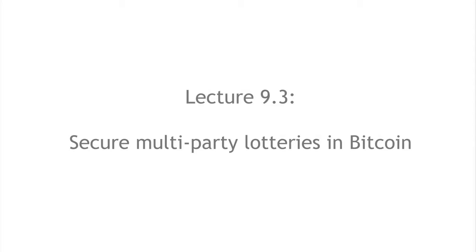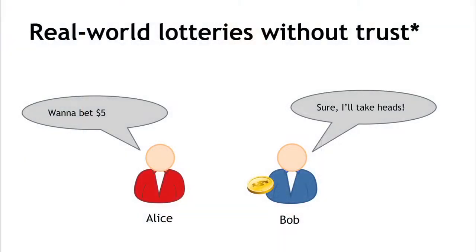Now we're going to talk about doing a multi-party lottery in Bitcoin in a secure way. We'll start with the offline version of what we're trying to build. How would we do a real-world lottery between two people without any trust? There's a very simple solution: if Alice and Bob want to bet five bucks, they'll both agree to a bet, Bob will flip a coin, one of them will call it while it's in the air, and they'll both have a very clear understanding of who won and trust that this was a random process.